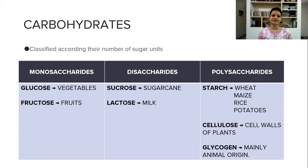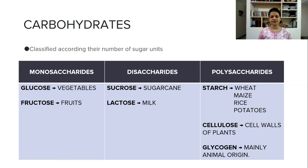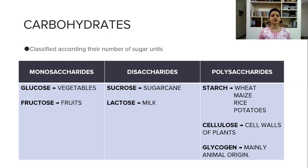As you see on the screen, there is a classification of carbohydrates according to the number of sugar units — monosaccharide, disaccharide, and polysaccharide. Monosaccharide means there is a single unit of sugar. In natural form, we get this monosaccharide from vegetables as glucose and from fruits as fructose. Disaccharide means two units of sugar; from sugar cane we get sucrose, and from milk we get lactose.